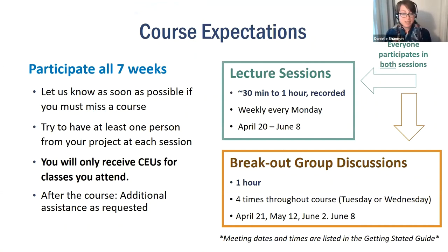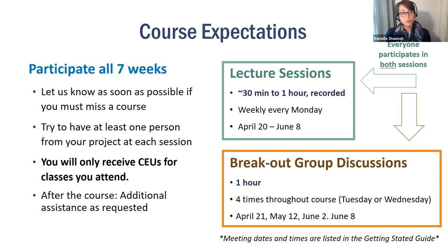The Getting Started Guide has all the detailed information related to our expectations for how this course will be run. We're hoping you'll participate in all seven weeks, and if you can't, that's understandable — just give us a heads up. We've applied for continuing education credits. We're not going to keep track of attendance in the lecture sessions, but we're going to ask that you keep track of your own attendance in both lecture and discussion sessions. At the end of the course, we'll ask you to fill out a form stating what days you attended in order to receive full credits.